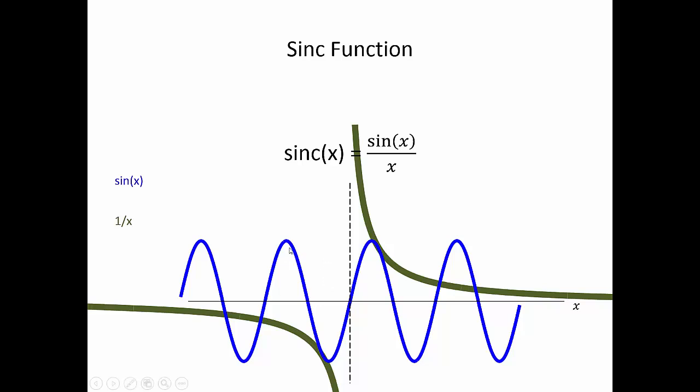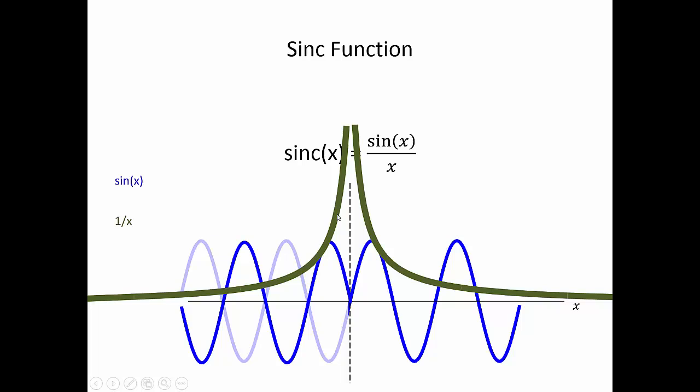Now we want to take this sine function and multiply it by this hyperbolic function. Well, let's think about that. If we take this negative portion from this function and move the negative sine instead of being on the hyperbolic function to be on the sine function, our sine function now inverts amplitudes for x less than zero.